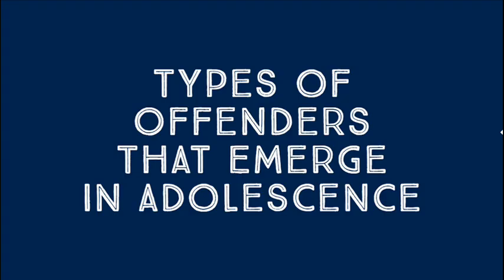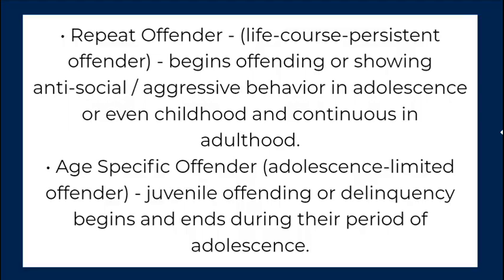Types of offenders that emerge in adolescence: Repeat offender / life course persistent offender — begins offending or showing antisocial aggressive behavior in adolescence or even childhood and continues into adulthood. Age-specific offender / adolescence-limited offender — juvenile offending or delinquency begins and ends during their period of adolescence.